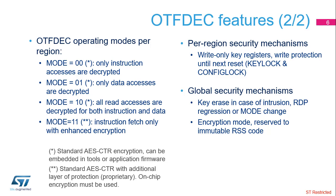If the region only contains instructions, the mode field of the region configuration register can be set to binary value 1-1. In this case, an additional layer of protection is added on top of the standard AES encryption algorithm, so the encryption process cannot be embedded in software tools — OTF-DEC must be used to perform the encryption using a dedicated RSS function. The configuration of each region can be independently locked. Both the 128-bit key and configuration parameters can be locked. All key registers are write-only and are automatically erased in case of intrusion detected by tampers, readout protection or RDP regression, or mode field change.